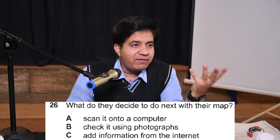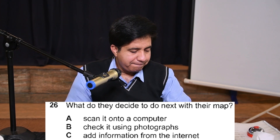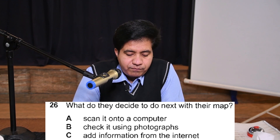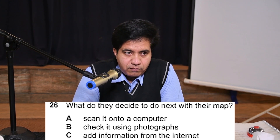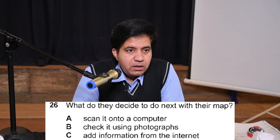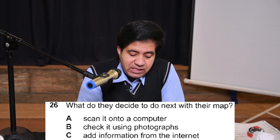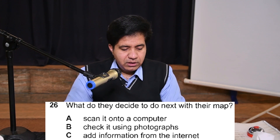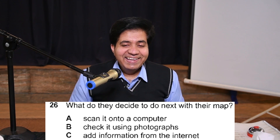Question 26: What do they decide to do next with their map? Audio: 'We could get a map of the region off the internet and see if we need to make any changes — but I couldn't find anything. You took some pictures, didn't you? I'll email them to you. I'll make my amendments using those, then scan it into our report.' 'Those' refers to the photographs — so the answer is B: check it using photographs.